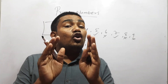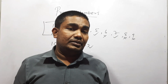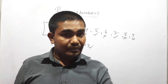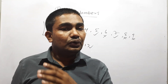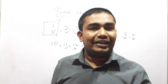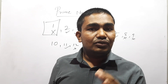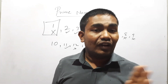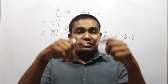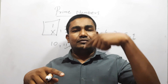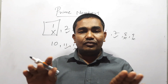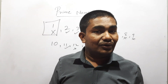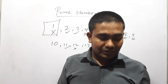Two is the only even prime number. Two is a prime number and an even number — both. All other prime numbers are odd numbers. Only two is the even prime number. Another important thing — all odd numbers are not prime numbers. A lot of students mix this up, sometimes thinking that all odd numbers are prime. No — all odd numbers are not prime numbers. All prime numbers, without two, are odd numbers. Only two is the even prime number.